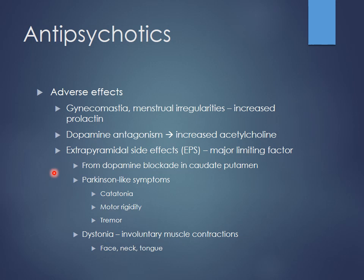There are many side effects with these drugs. Similar to decreased dopamine activity increasing acetylcholine activity as in Parkinson's, there's also a seesaw effect between dopamine and prolactin. Blocking dopamine leads to increased prolactin release. This causes gynecomastia especially in male patients, menstrual irregularities in female patients, can affect ovulation, and may make it difficult to conceive. The main limiting factors are extrapyramidal side effects — Parkinson's-like symptoms — which are related to how much dopamine specificity these drugs have.